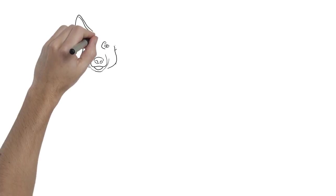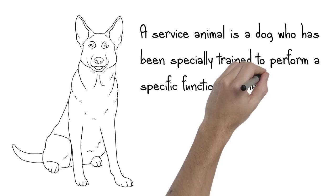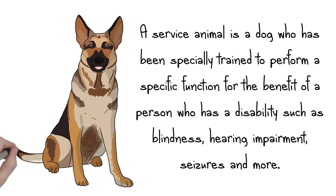A service animal is a dog who has been specially trained to perform a specific function for a person who has a disability, such as blindness, hearing impairment, seizures, and more.